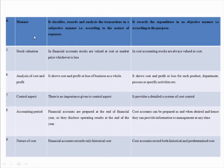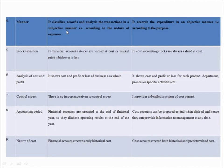Fourth difference is the manner of recording. Financial accounting classifies, records, and analyzes transactions in a subjective manner — that is, according to the nature of expenses, such as classification into real accounts, personal accounts, profit and loss, capital, and revenue expenditure. Cost accounting records expenditure in an objective manner — that is, according to the purpose for which costs are incurred, such as direct and indirect costs.